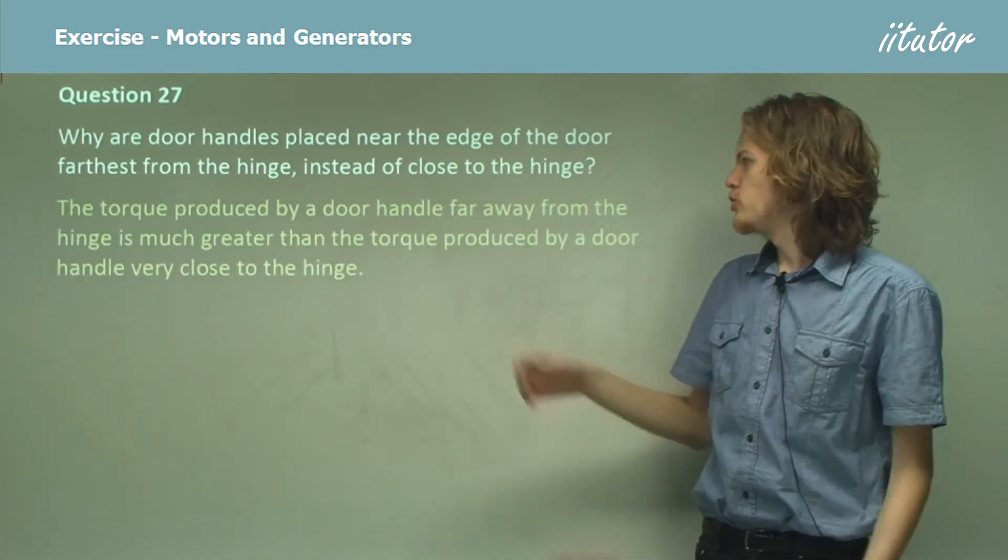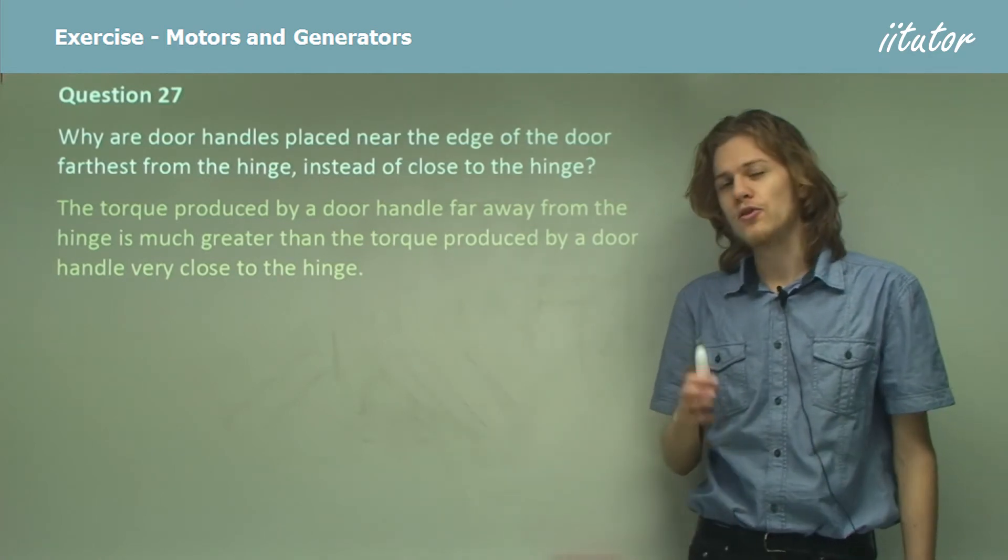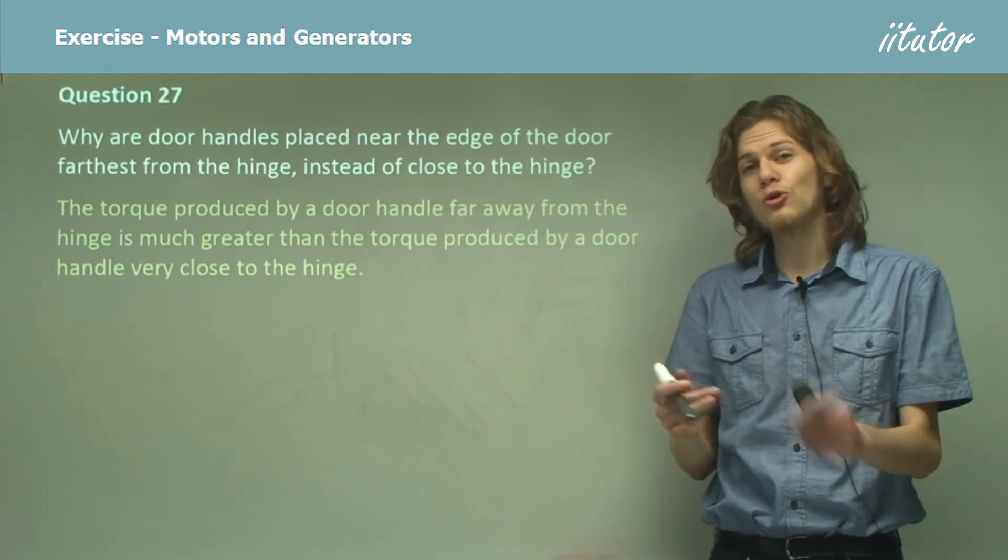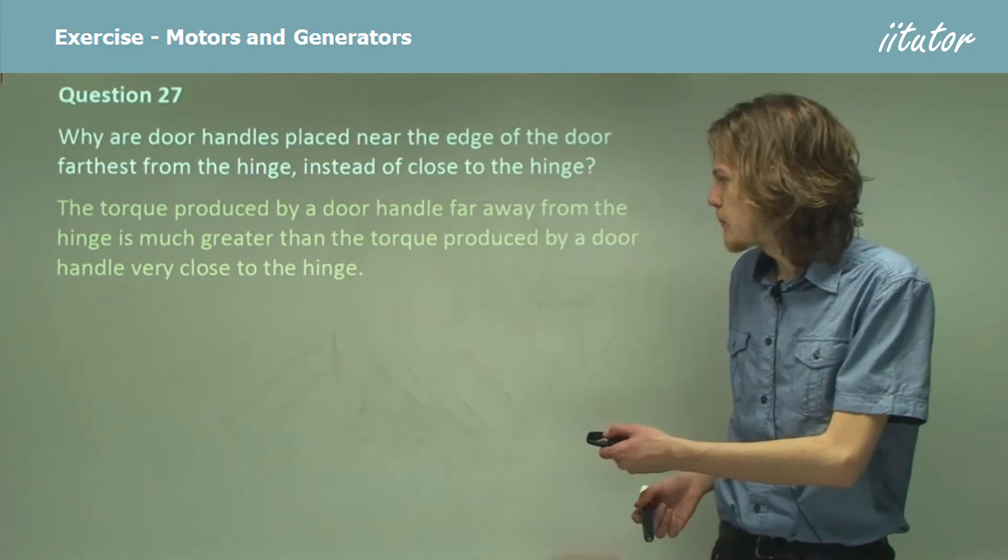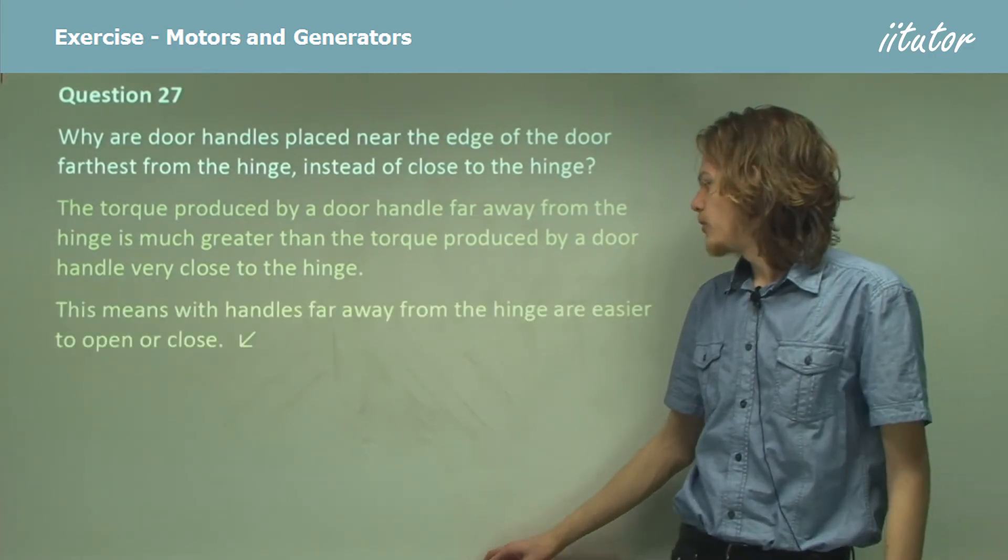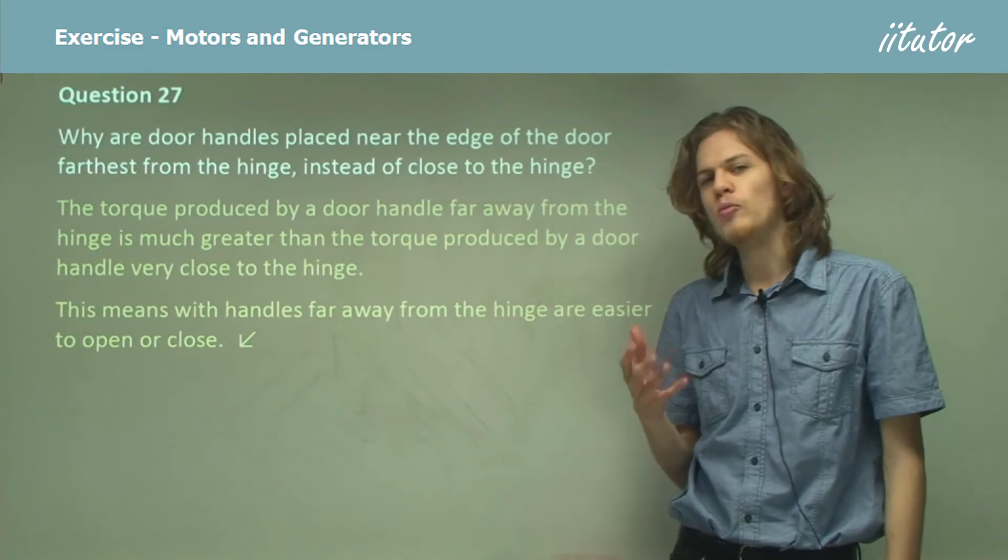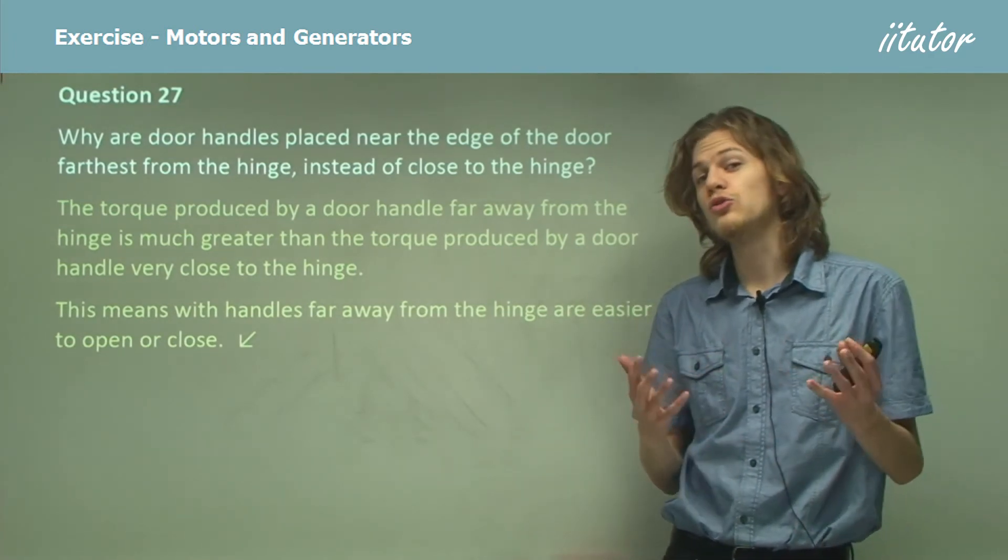The torque produced by a door handle far away from the hinge is greater than the torque produced by the door handle close to the hinge. You might want to give a reason why this is, in terms of distance. The handle far away from the hinge are easier to open or close, because there's a greater torque.